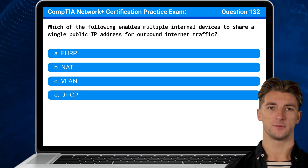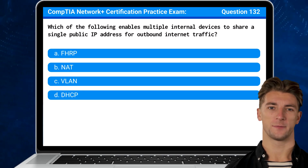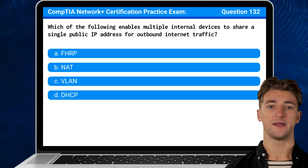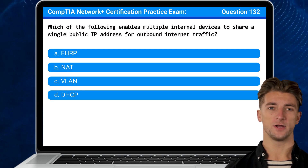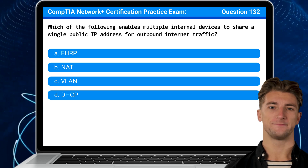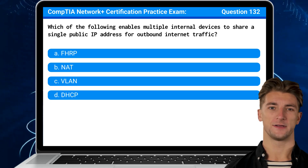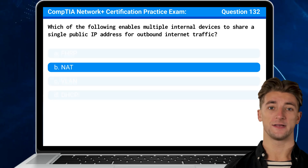Question 132: Which of the following enables multiple internal devices to share a single public IP address for outbound internet traffic? The answer is B, NAT.